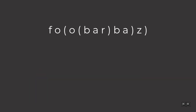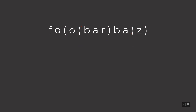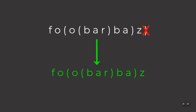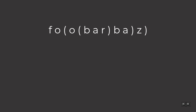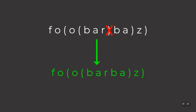For this example, technically we could just remove all the parentheses and that would be a valid string. However, we would be removing five parentheses, and we need to remove the minimum amount possible. A better choice would be to remove just one parenthesis — now we have a valid string because each open parenthesis has a matching closing parenthesis in valid order. Depending on the algorithm we write, we could also remove a different single parenthesis and that would also be valid.